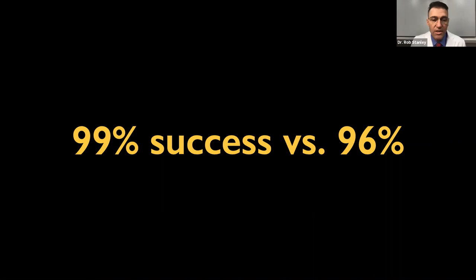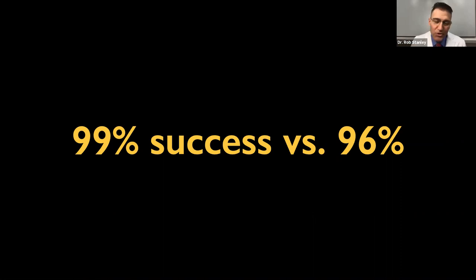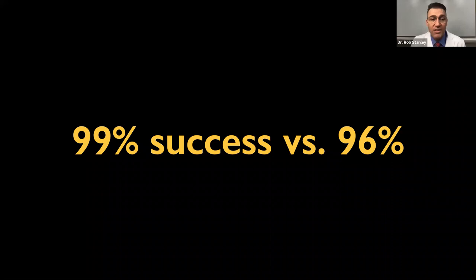You might say the difference between 96% and 99% is only 3%, not a big deal. But let's reframe: if I'm at 99% success I have one failure every three weeks; at 96% you have one failure every week. We live in a world where we want zero complications, zero failures. The difference between 96 and 99 is 3x — it's a big deal. So let's talk about implant design.